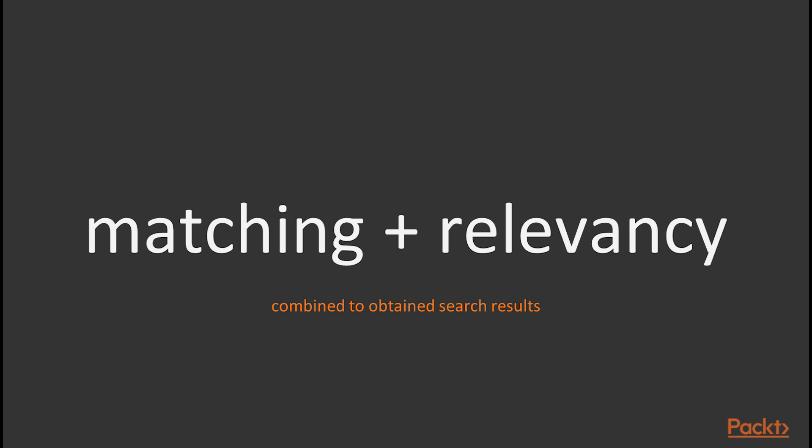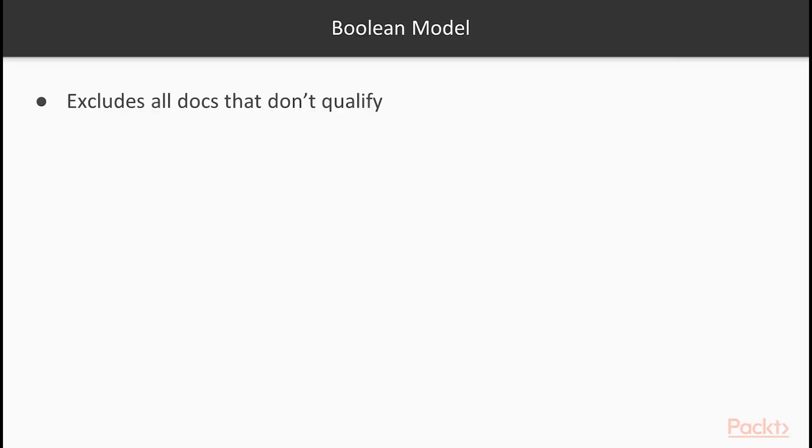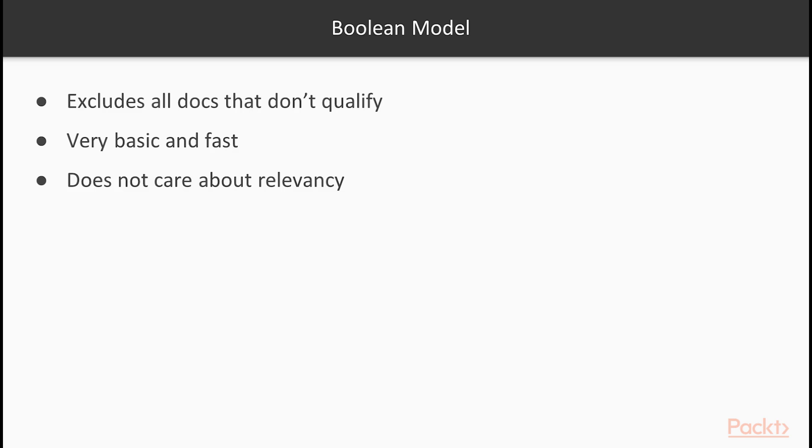While matching is important, establishing relevancy relative to the original query is arguably more important. Relevancy basically tells you which documents of all the matching documents best match the query, with the resulting order having the best matches appear at the top of the list all the way down to the least best matches at the bottom in descending order by default. The Boolean model simply aims to exclude all documents that don't qualify per the query — it's very basic and fast. The Boolean model also doesn't care about relevancy.